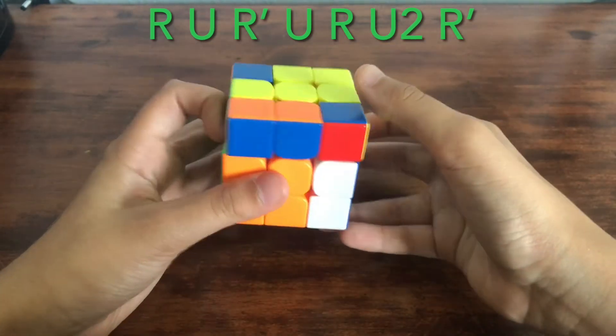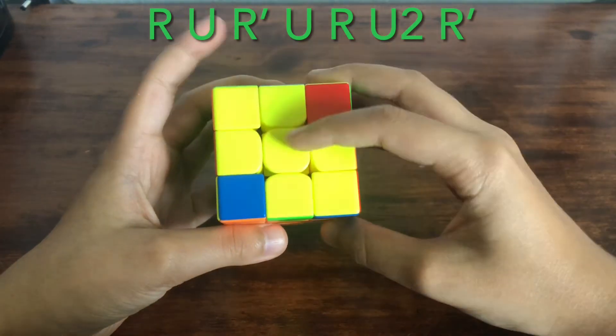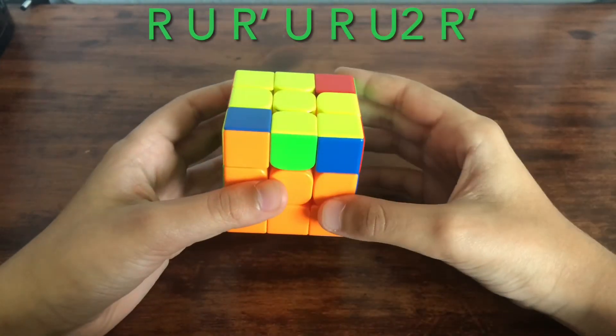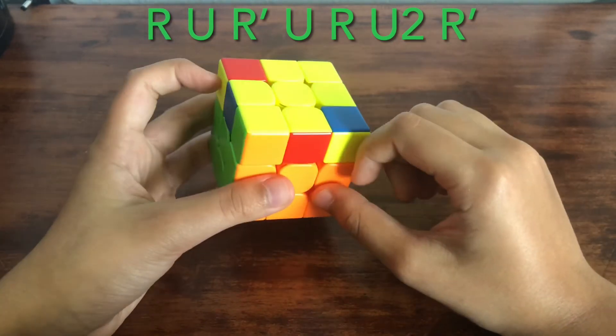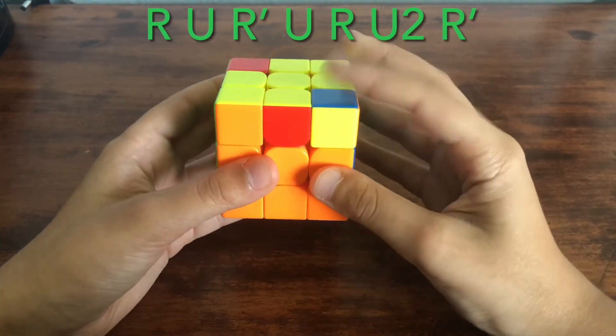Then you're gonna get this case where you have these two blocks opposite from each other. So you're gonna hold it like this with this yellow facing you and this one in that direction, and you're gonna do it again.